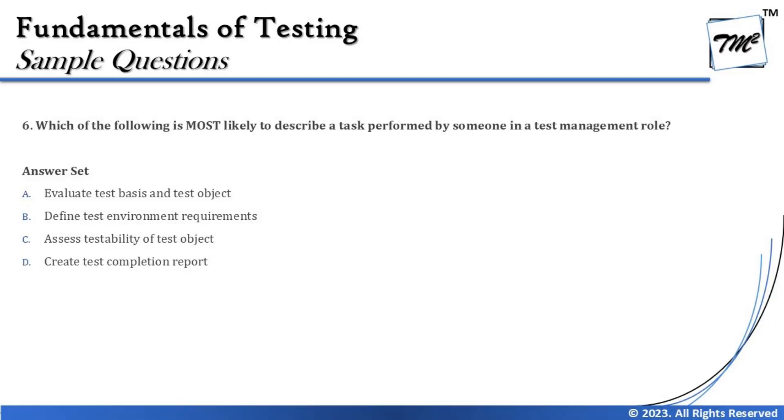The next question is number six: which of the following is most likely to describe a task performed by someone in a test management role? In chapter one, we said there are two standard roles in testing: the test management role, also known as test manager, and the testing role, which is the test engineer. Test planning, monitoring and control, and test completion belong to the test management role, whereas test analysis, design, implementation, and execution belong to the testing role.